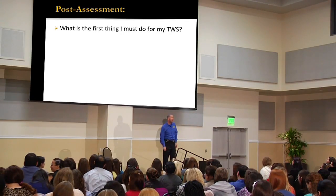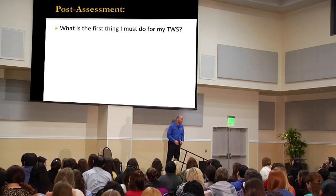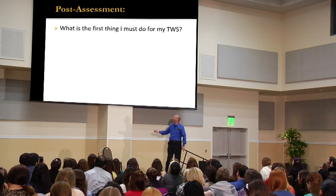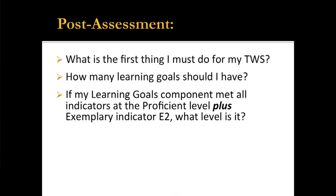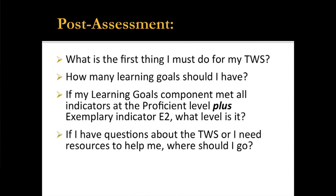Quick post-assessment: What's the first thing you've got to do for your TWS? Contextual factors. How many learning goals? Three to five. If my learning goals meet all of the proficient indicators and meet exemplary indicator E2, what's my rating? Proficient. If I have questions or need resources, where do I go? The website.